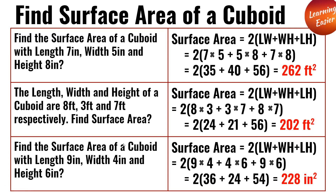Next, find the surface area of the cuboid with length 9 inches, width 4 inches, and height 6 inches. 2(9×4 + 4×6 + 9×6). 9 times 4 is 36, 4 times 6 is 24, 9 times 6 is 54. 2(36 + 24 + 54) is equal to 228 inches squared.